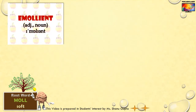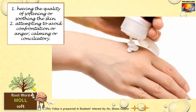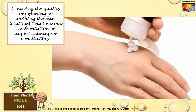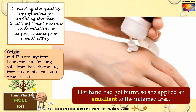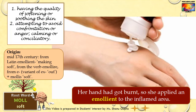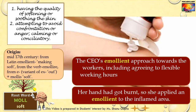The next word is emollient. The prefix e means out and mollusk means soft, so emollient literally describes something that softens out. An emollient cream or lotion makes your skin soft and supple or soothes your skin. Example: Her hand had got burnt so she applied an emollient lotion to the inflamed area. In an extension of its meaning, emollient can also describe a conciliatory approach that attempts to soothe someone or avoid confrontation. Example: The CEO's emollient approach towards the workers, including agreeing to flexible working hours, has worked wonders for their productivity.